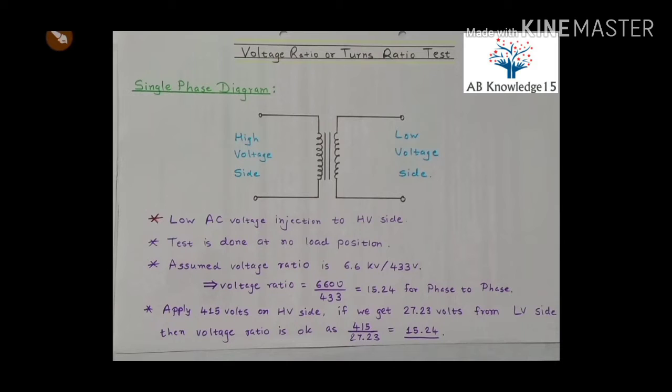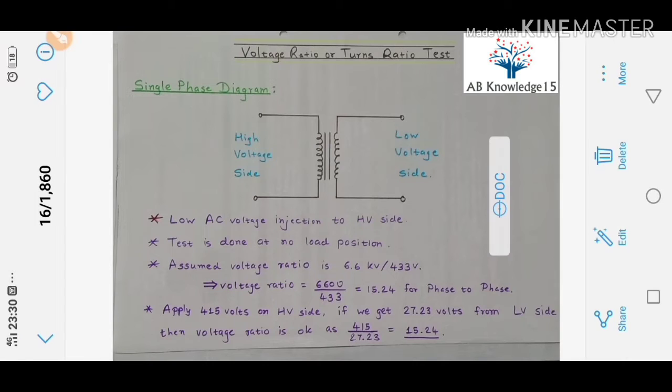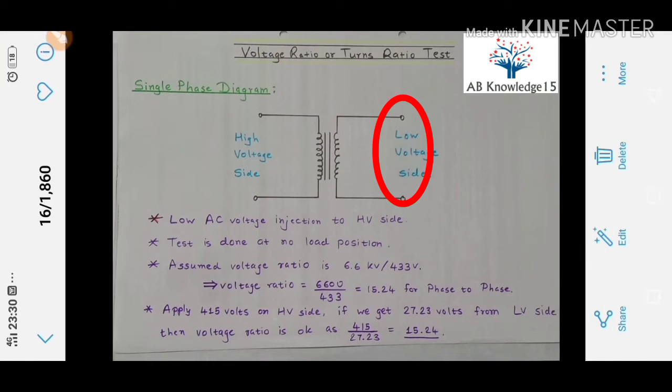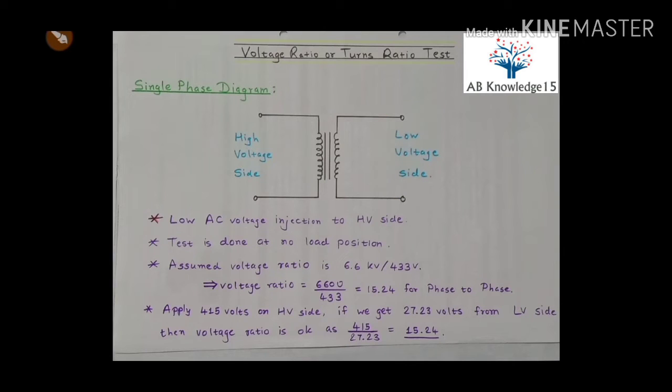We will understand this voltage ratio test procedure by this single phase diagram of transformer. Here this is the high voltage side and this is the low voltage side. We are injecting low AC voltage to high voltage side of transformer. Why? Because as per the voltage ratio of the transformer, if we are applying low AC voltage, the secondary side voltage will also be low comparing to the primary side, and that is for the safety purpose.